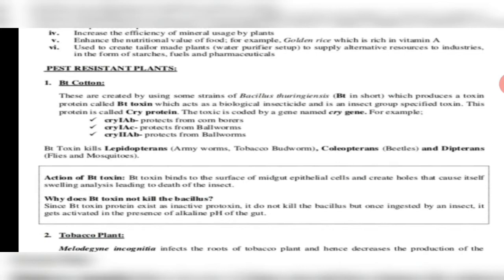Pest-resistant plants like BT cotton were created. These are created using strains of Bacillus thuringiensis, in which BT toxin is produced. There is a protein called the cry protein, produced by the cry gene, which prevents various pests from attacking. For example, cry-1-AB protects from corn borers, cry-1-AC protects from ball worms, cry-2-AB protects from cotton ball worms. BT toxin kills lepidopterans, army worms, tobacco budworm, coleopterans like beetles, and dipterans like flies and mosquitoes.